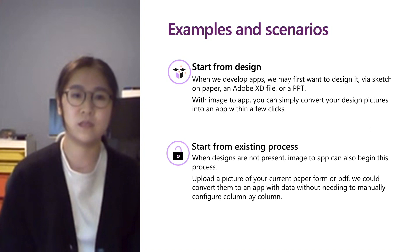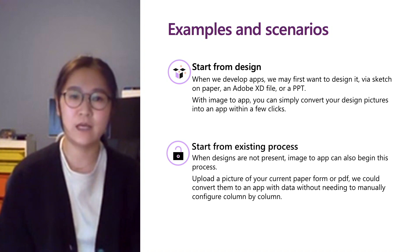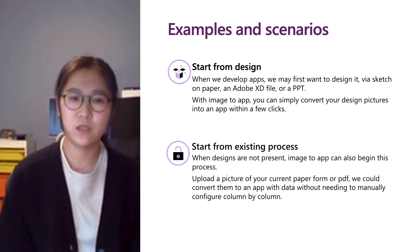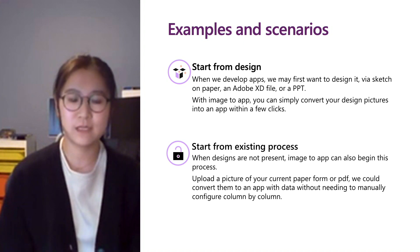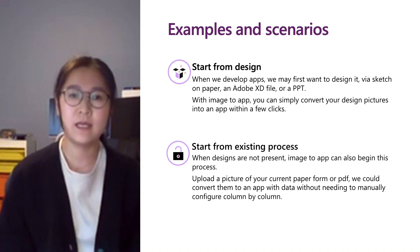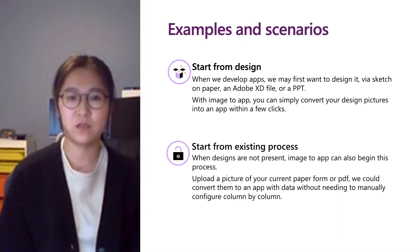Let's see a real scenario where a user uses Image to App. Say you're in a team or you just want to start with some designs. You may want to first put it on paper, draw a sketch, use Adobe XD, or even use PPTs. With Image to App, all you need to do is take a picture or screenshot and simply upload it to PowerApps — then PowerApps will cover the rest within a few clicks. What if you don't have designs or you're just not good at drawing? It's okay. Image to App can also allow you to convert your image to an app for existing processes — for example, current paper forms or PDF forms — and convert them into an app with data, without needing to manually configure column by column.